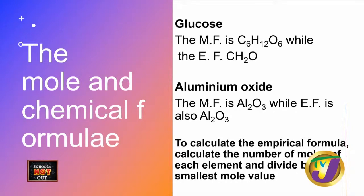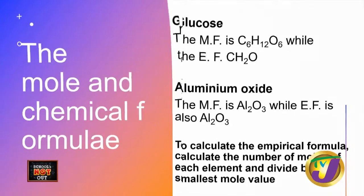Some compounds have the same molecular and empirical formula. For example, aluminum oxide Al₂O₃ — two cannot go into three and three cannot go into two, so this is already the simplest mole ratio. Its molecular formula and empirical formula are the same. To calculate the empirical formula, you must calculate the number of moles of each element and then divide by the smallest mole ratio.